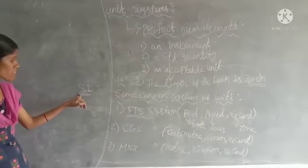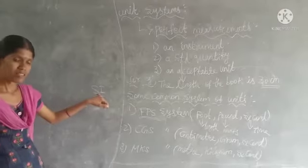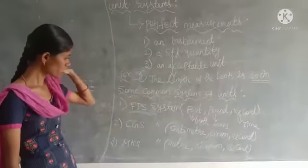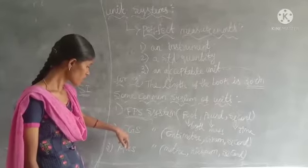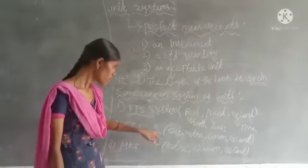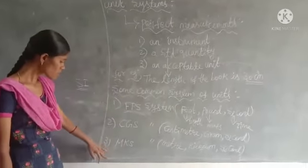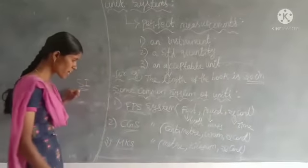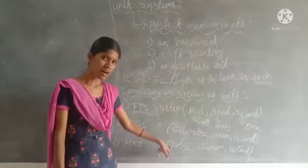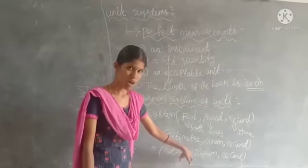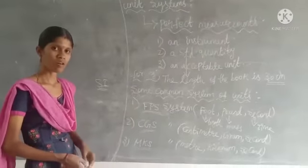There is also the SI system, which stands for Standard International System — we will learn about that in the next class. The third system of units is the MKS system: M stands for meter, K stands for kilogram, and S stands for second. Meter is for length or distance, kilogram is for mass or weight, and second is for time. These are the different types of systems of units.